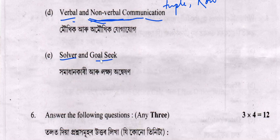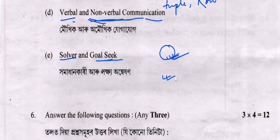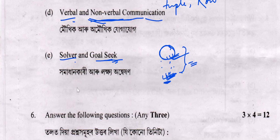Solver: The Solver tool in a spreadsheet is used to find a target value. You can change the target value, and it finds multiple variable values to change in order to achieve the target total value.